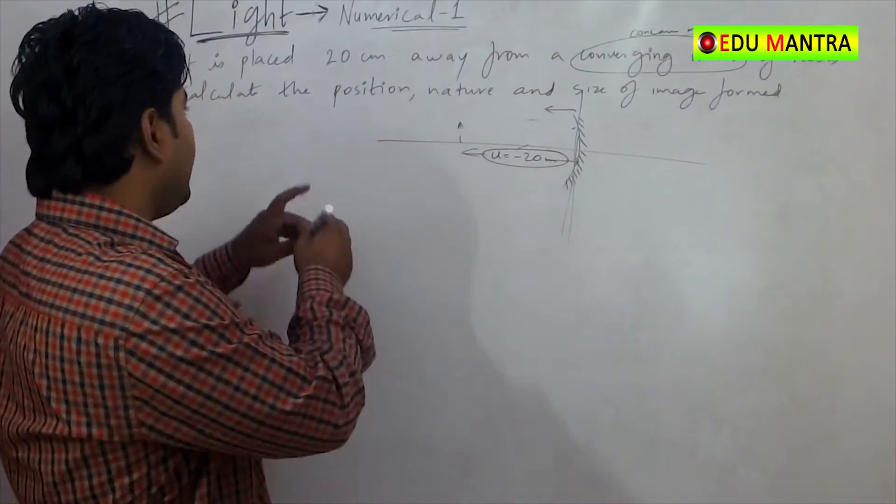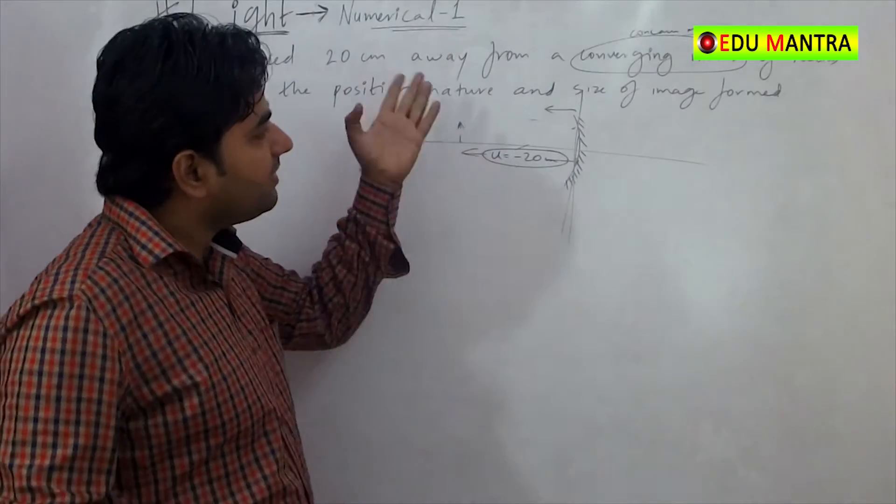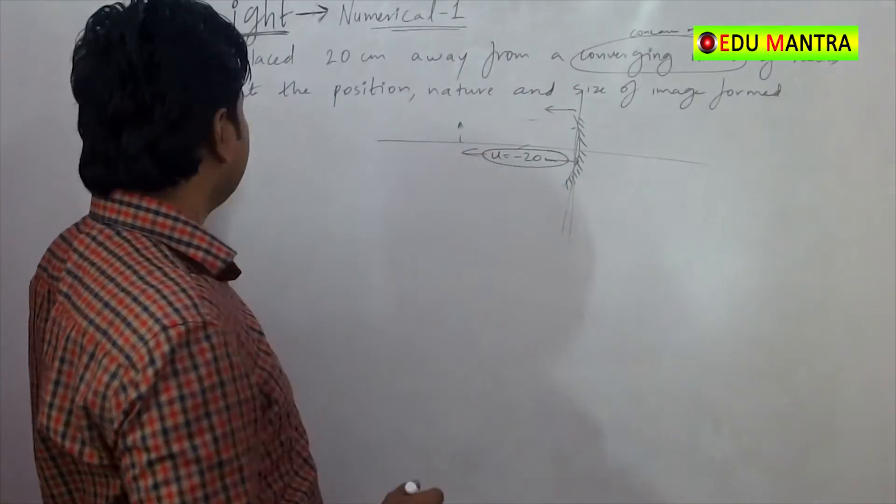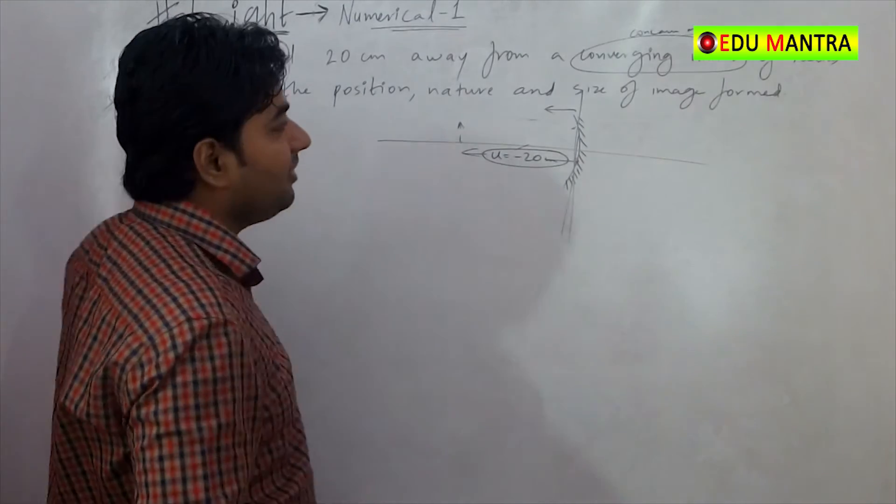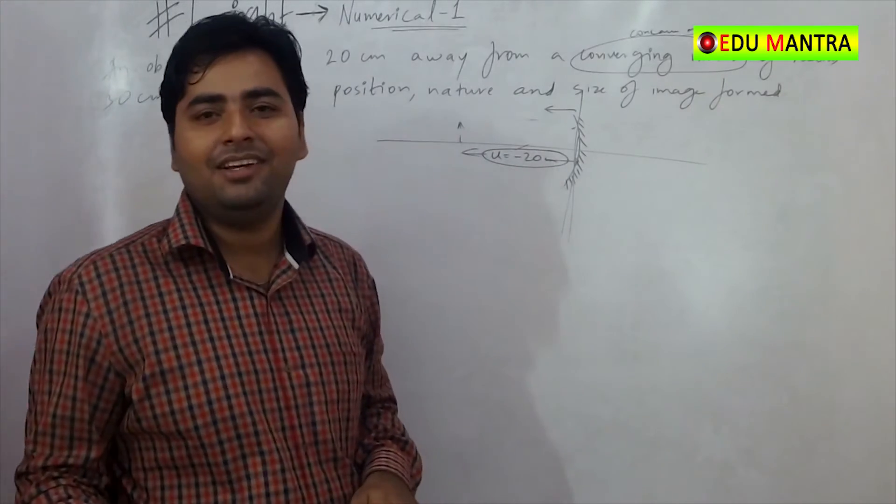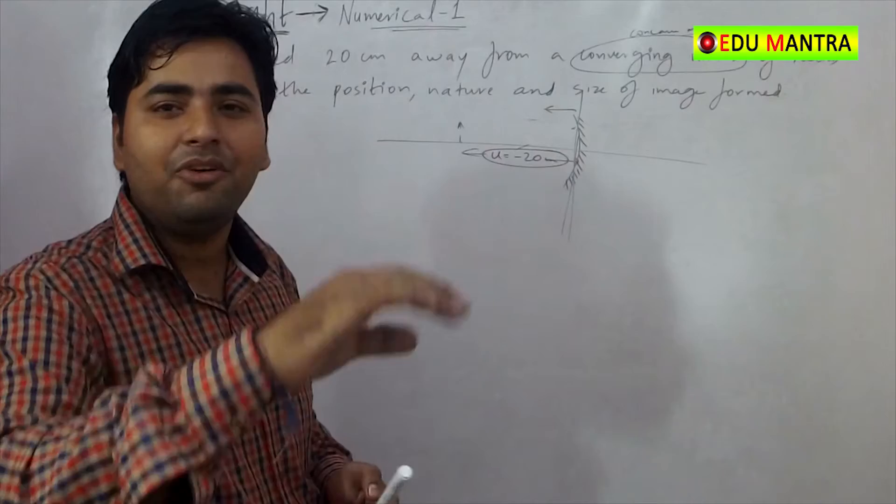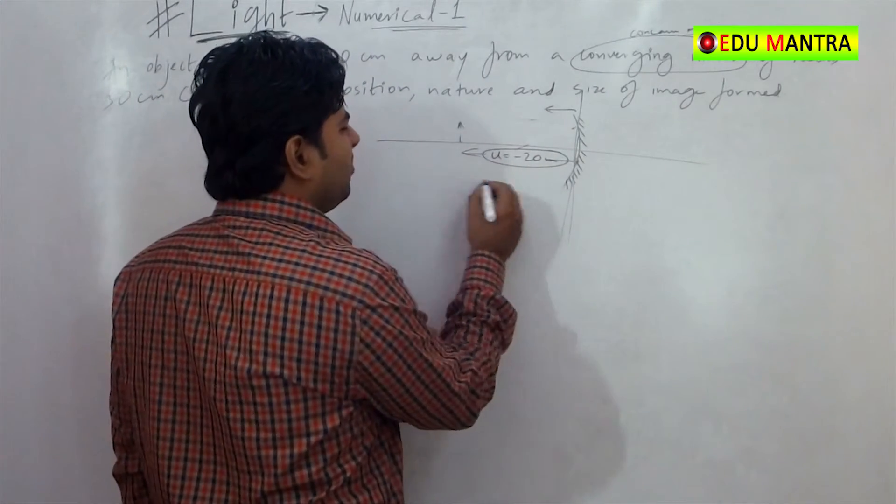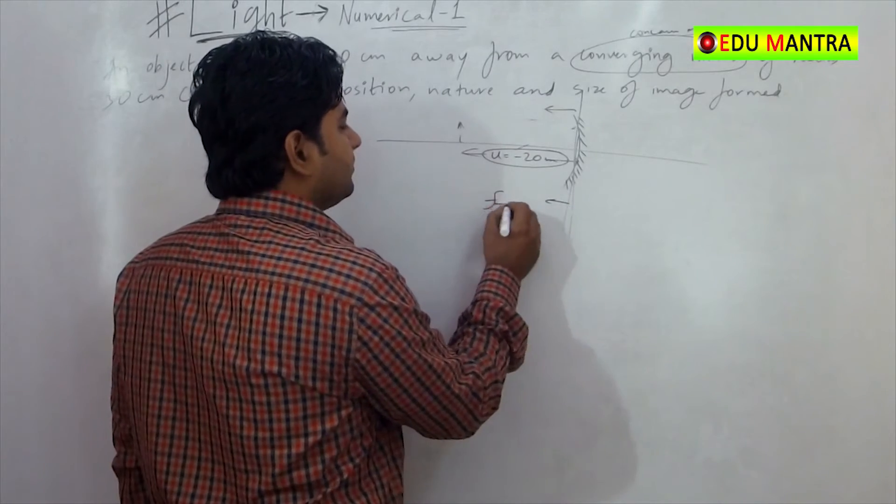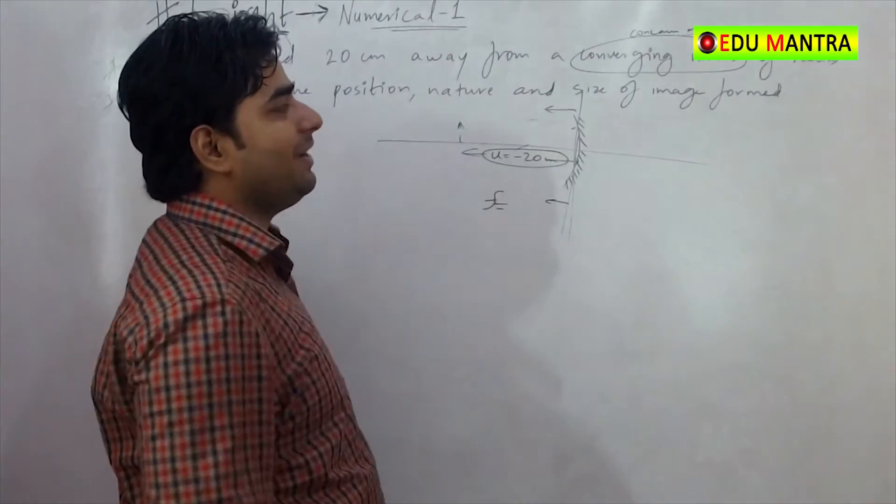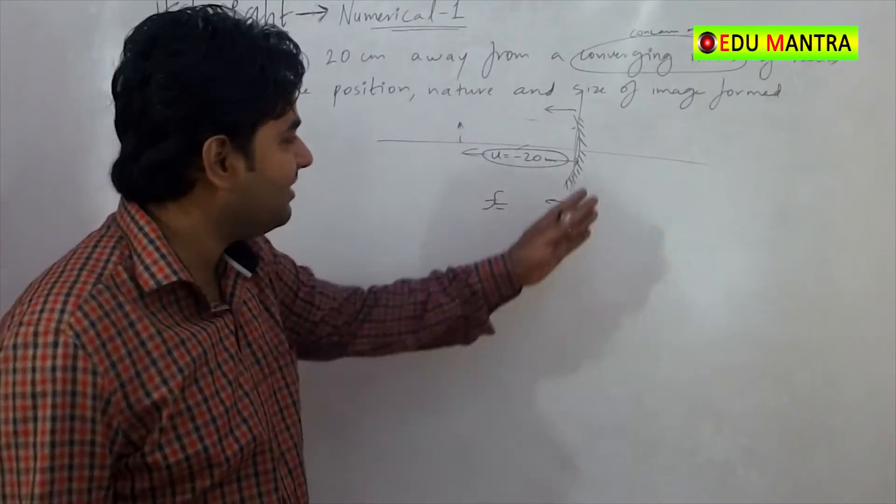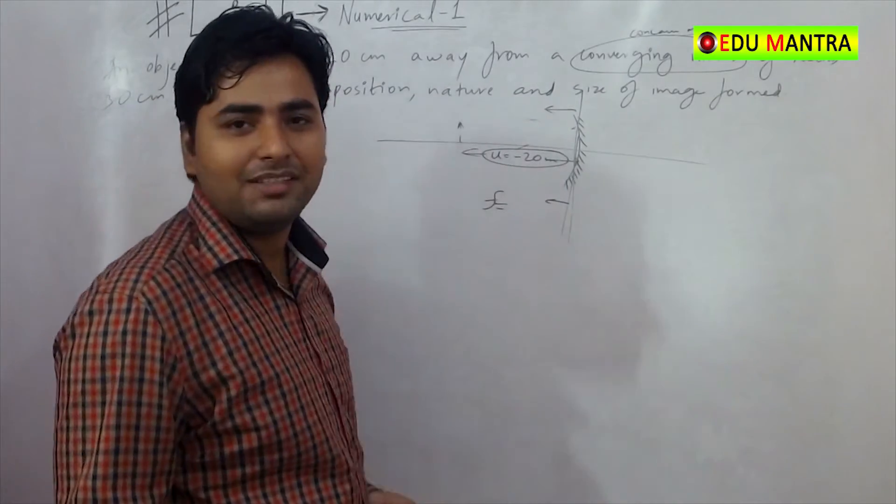An object is placed at minus 20 cm in front of a concave mirror of radius 30 cm. So, if the radius is 30 cm, what is the focal length? And again, concave r and f, by sign convention, that is negative.